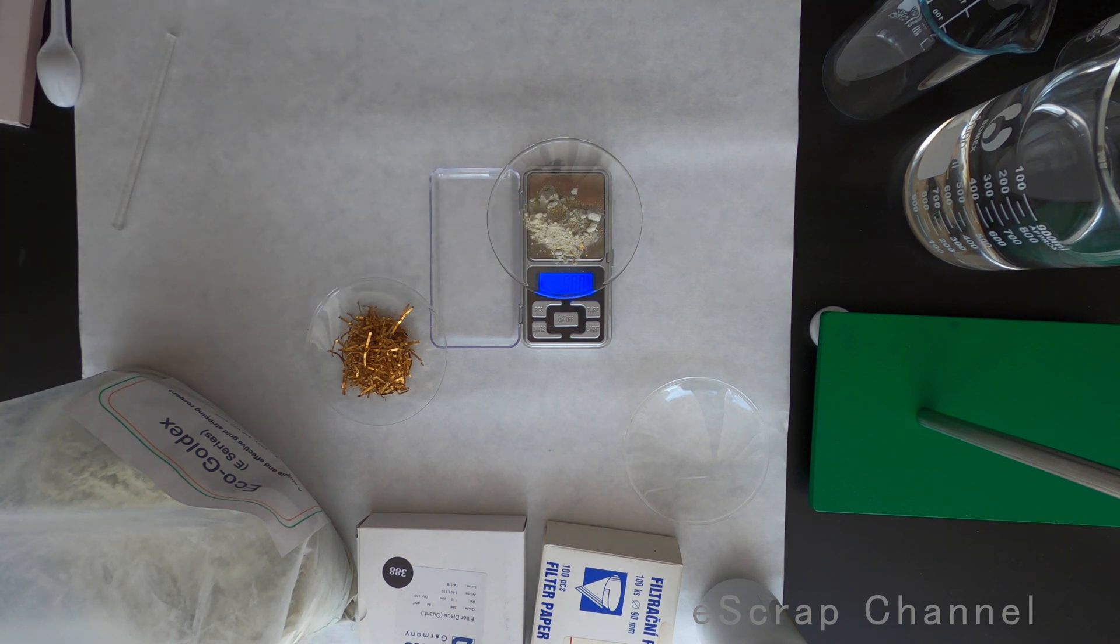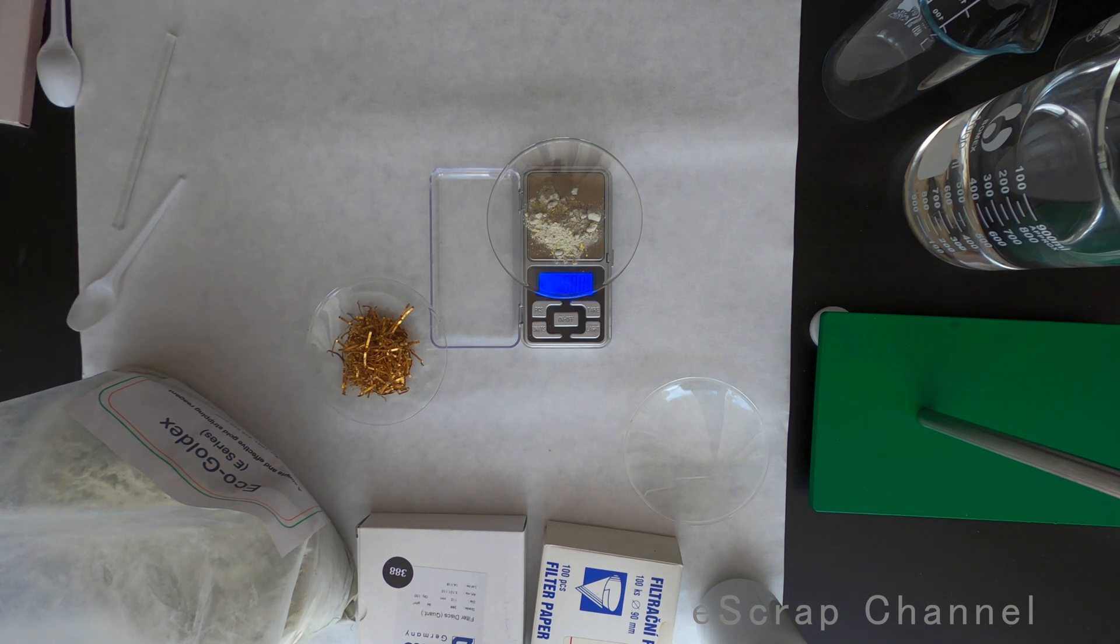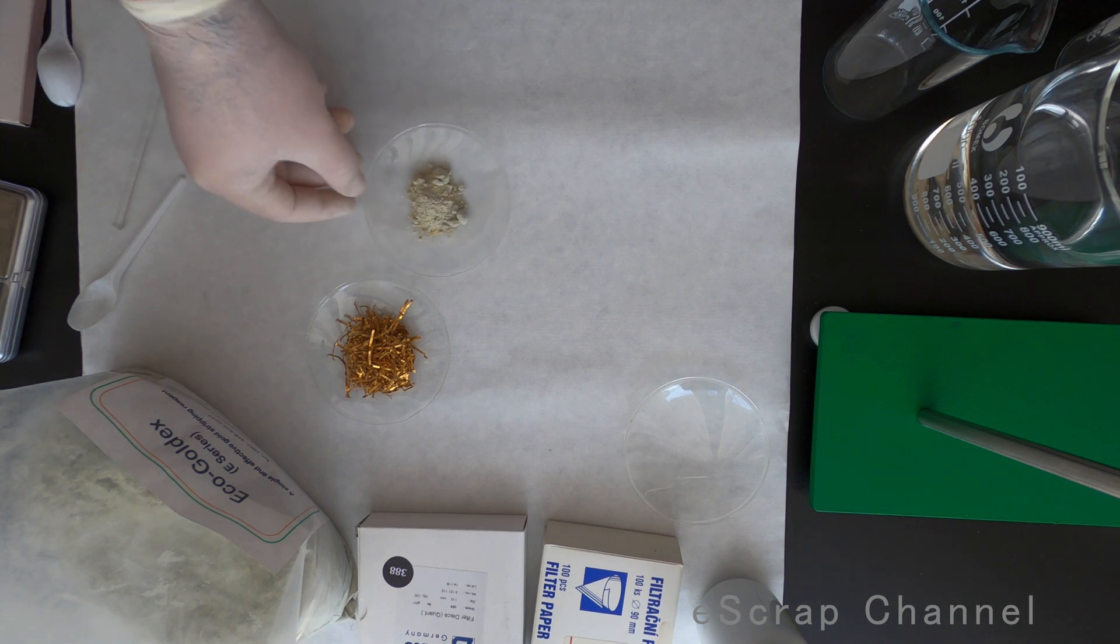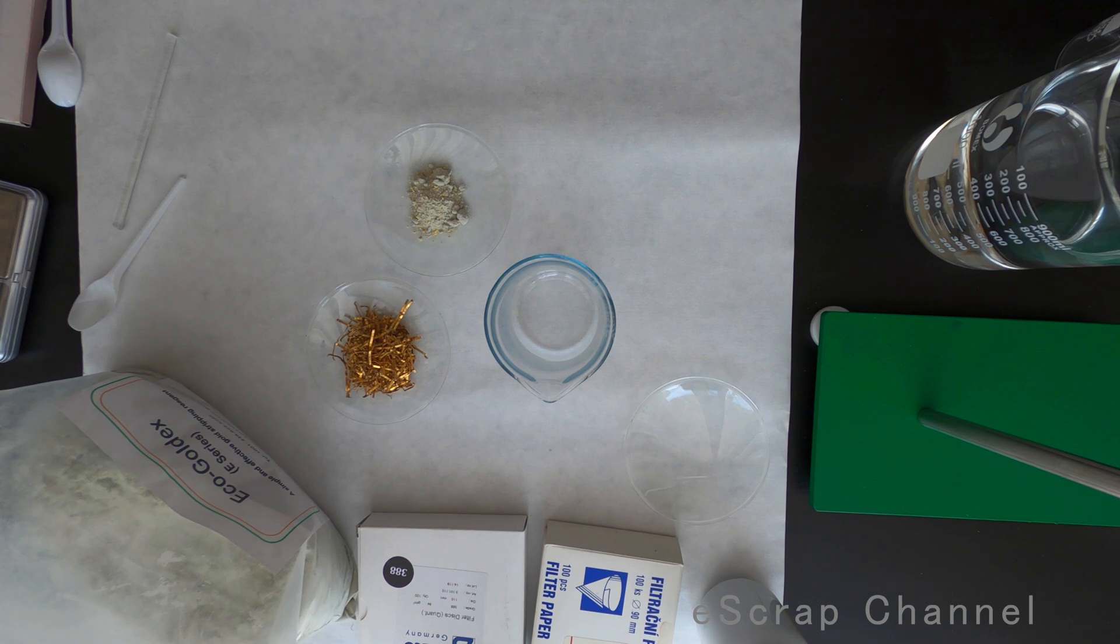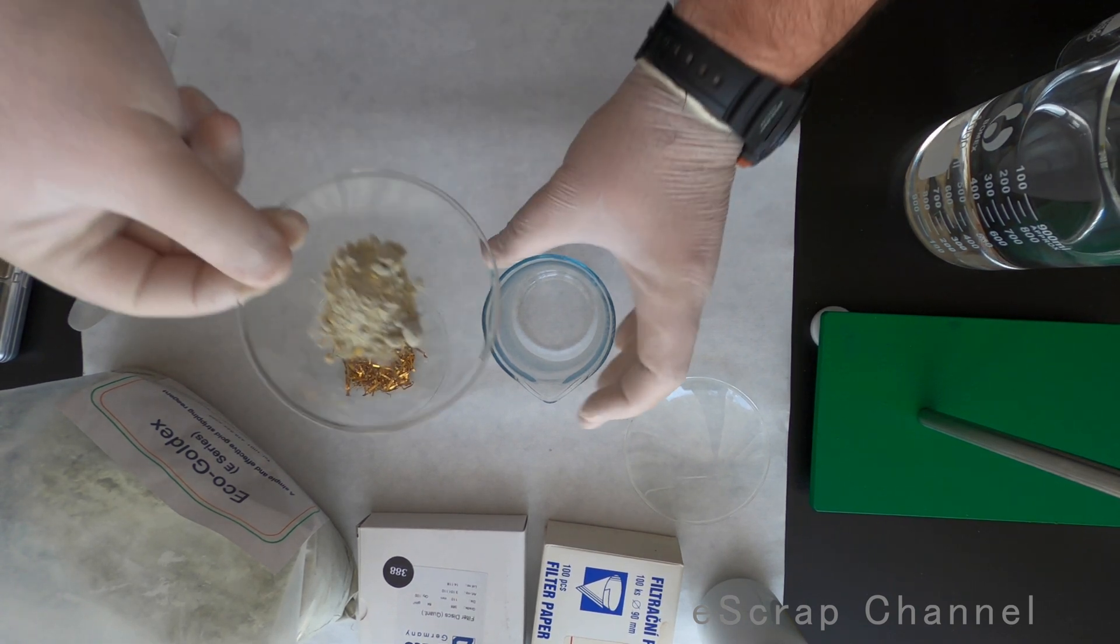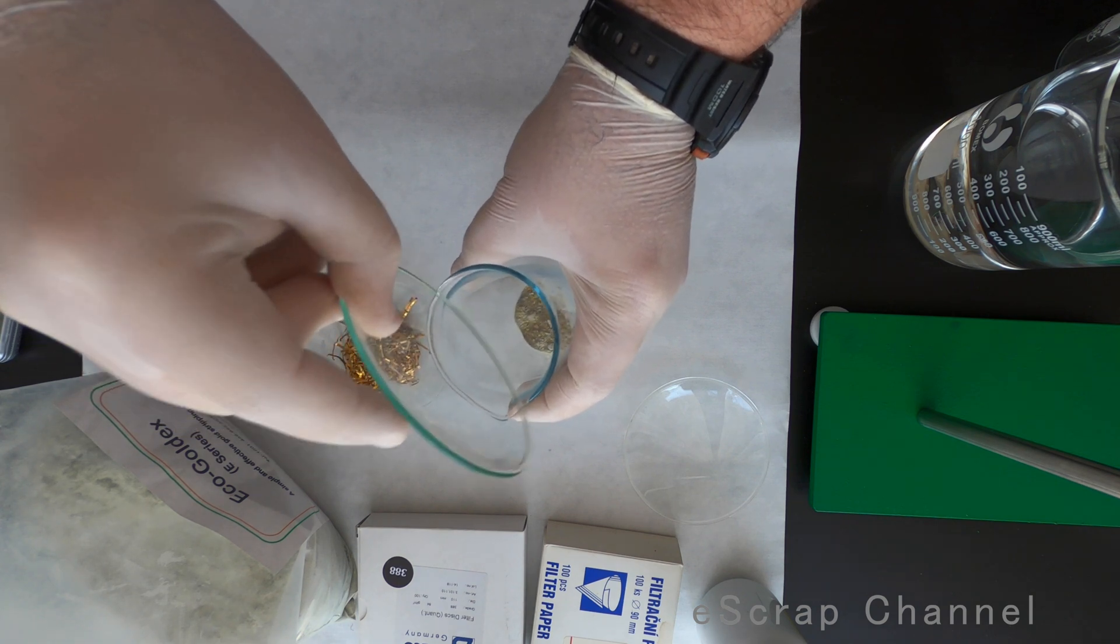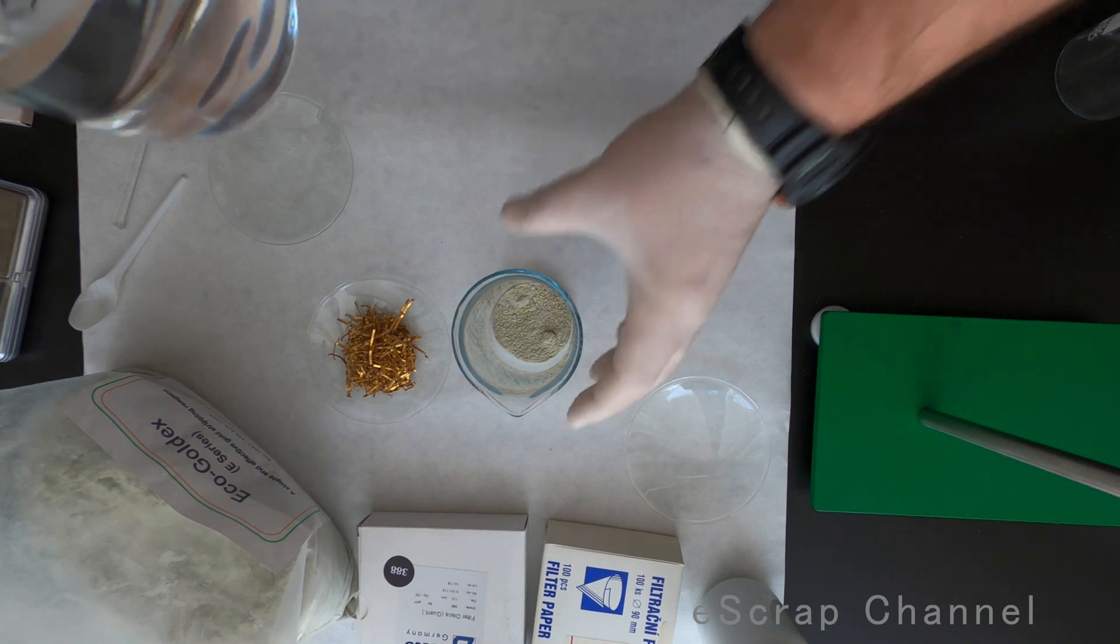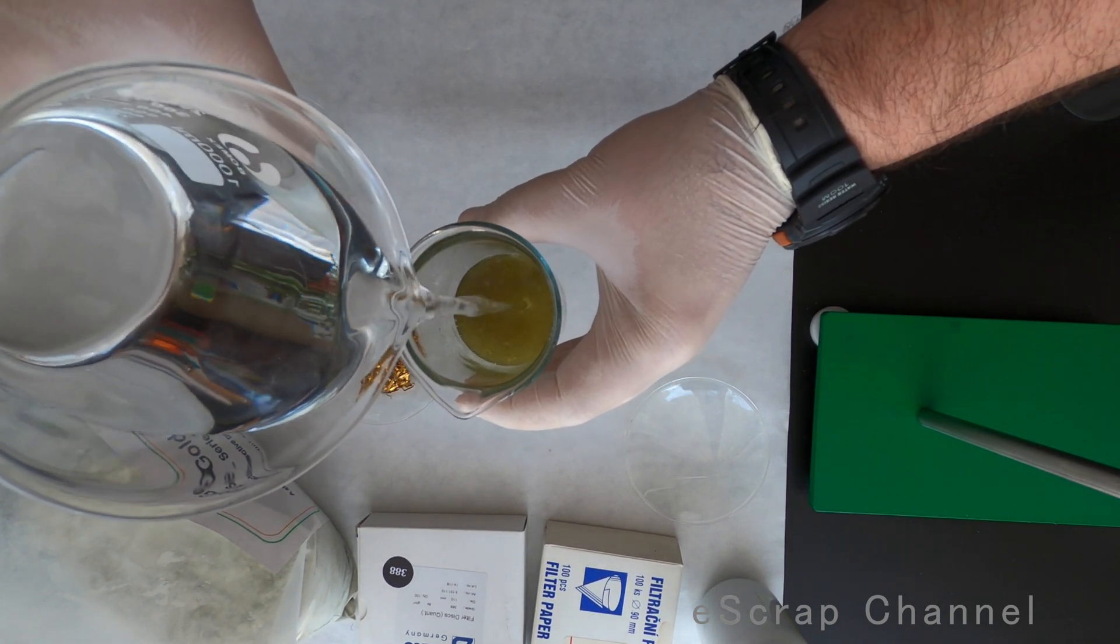Great! Okay, so we are ready. After we have our gold stripping agent, our pins, what else do we need? We need distilled water and we have to dissolve these 5 grams of gold stripping agent into 100 milliliters of water. So let's dissolve it quickly.